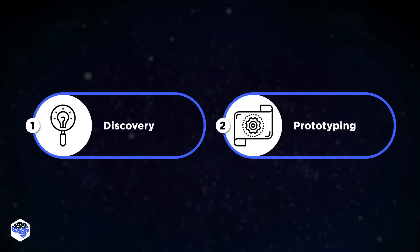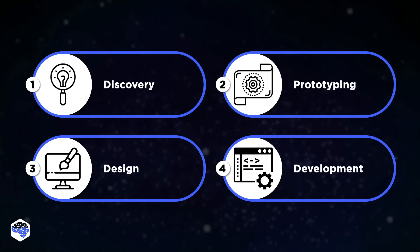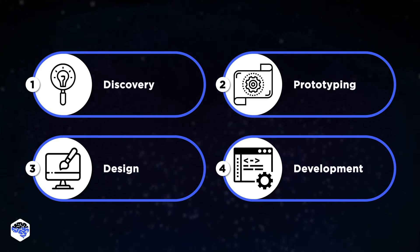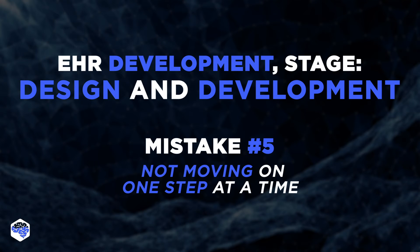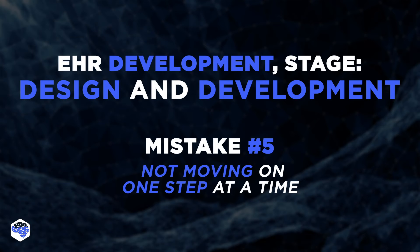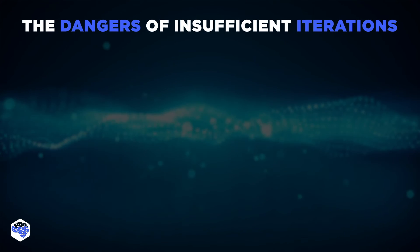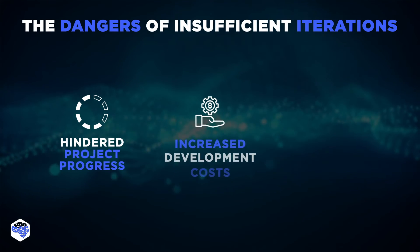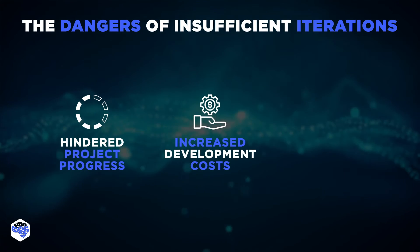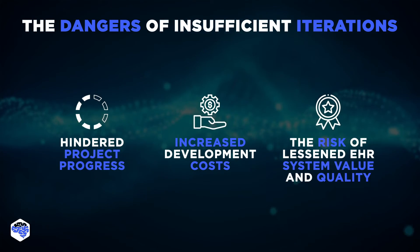After that, we move on to the design and development stage. To ensure its success, Jelvix experts recommend planning progress reviews with stakeholders every couple of weeks. A comparatively short iterative cycle enables the team to incorporate valuable feedback and refine the software efficiently until it meets the desired standards. Conversely, inadequate iteration planning can impede project progress, inflate development costs, and compromise EHR system quality.